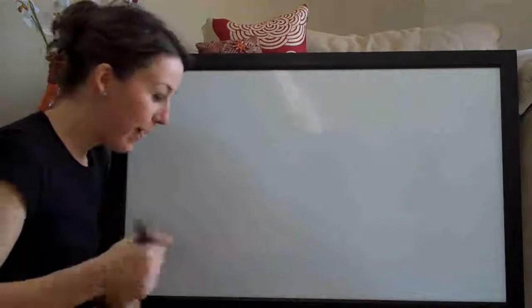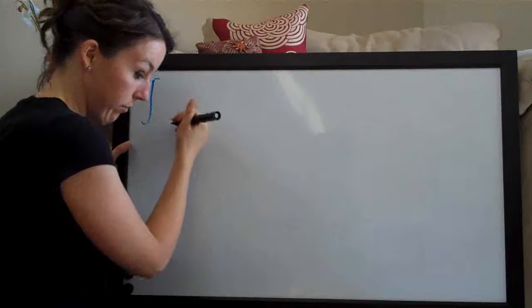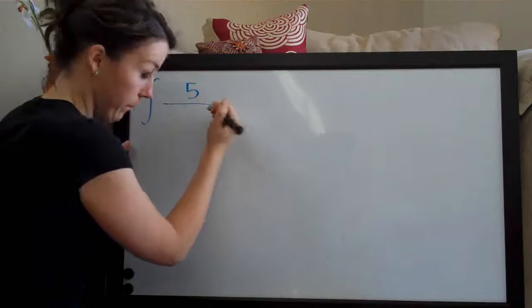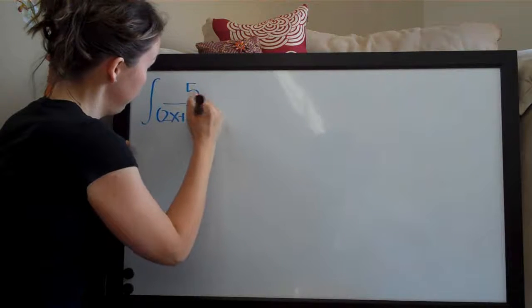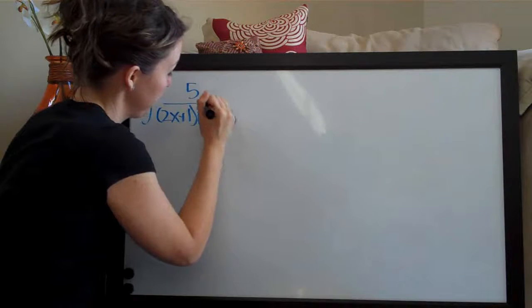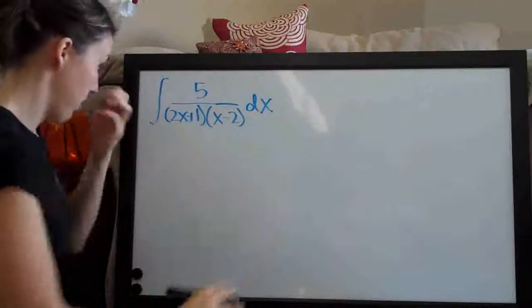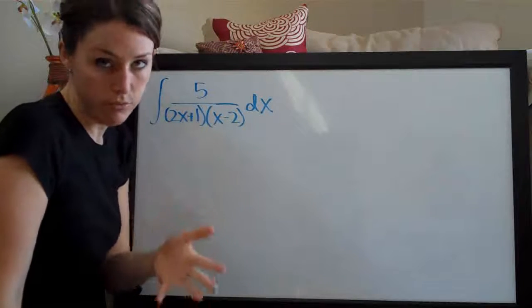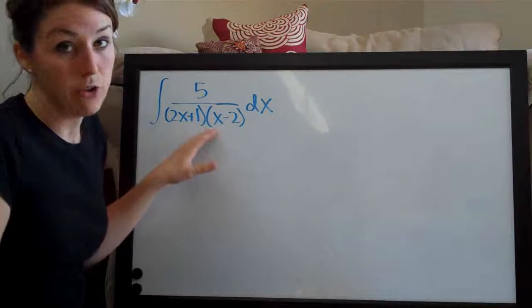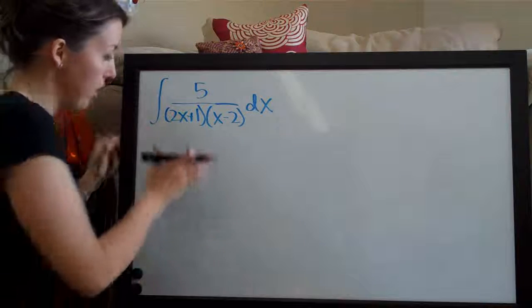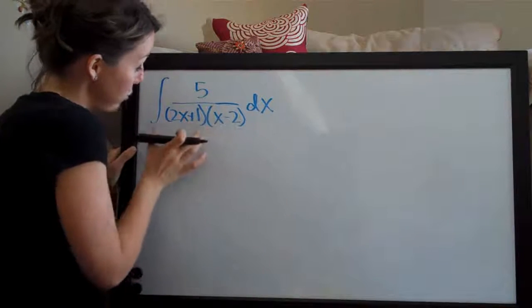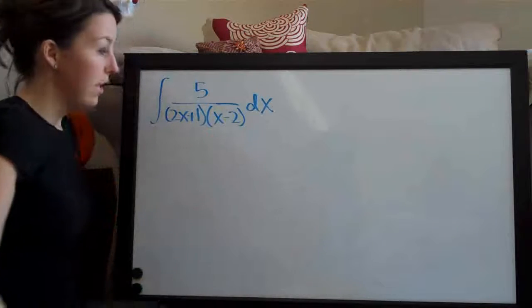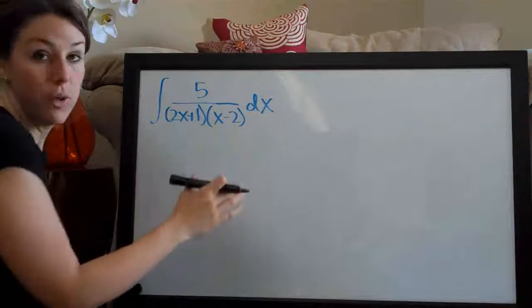Hi everyone, welcome back. We're going to be doing a partial fractions integral. This problem is the integral of 5 over (2x+1)(x-2) dx. Even if it were not in a partial fractions section of the book, this problem would stick out as a partial fractions problem because of the obvious way that the denominator is separated into these two terms, 2x+1 and x-2. That makes it really easy to turn this into a partial fractions problem.